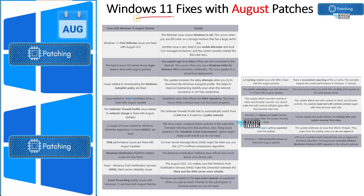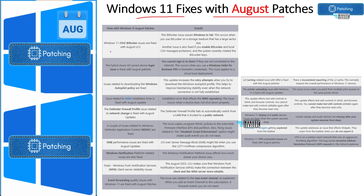Now let's check Windows 11 bug fixes with August 2023 patches. There are a lot of bug fixes — I haven't covered everything here; you can get the full list from the description of the video. One notable fix is BitLocker-related: two BitLocker issues got fixed with these August patches.